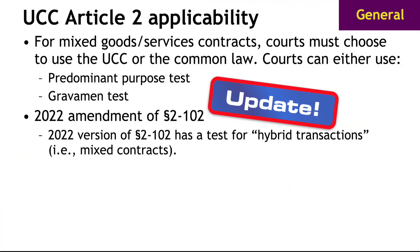The ULC and ALI — the entities that drafted the Uniform Commercial Code — came out with amendments in 2022. These amendments have been adopted in many states. The amendments add a provision to Section 2.102 that prescribes a test for figuring out whether UCC Article 2 applies to mixed goods-services contracts, which the UCC calls hybrid transactions. The ULC and ALI picked a rule that follows the trend of law states are already using, but with a tweak that maximizes the applicability of their work. This new Section 2.102 adopts a tweaked version of the predominant purpose test that makes sure the UCC either wins completely or wins partially.